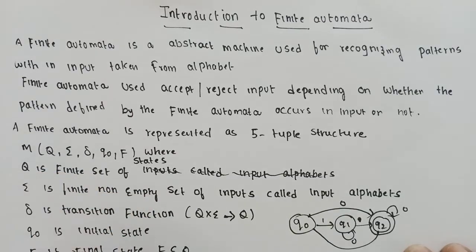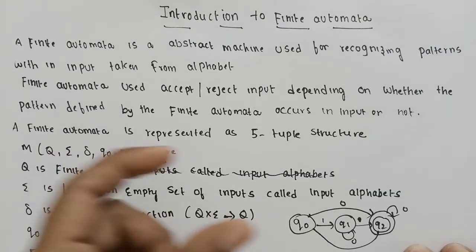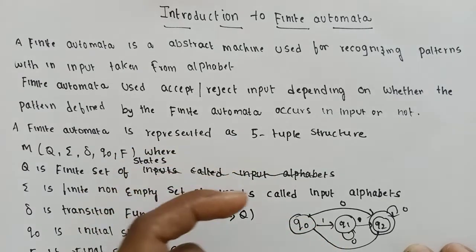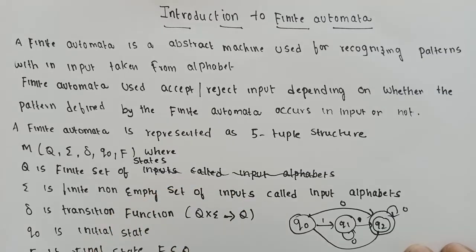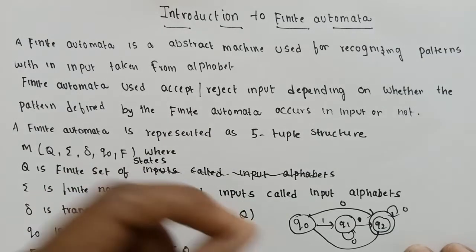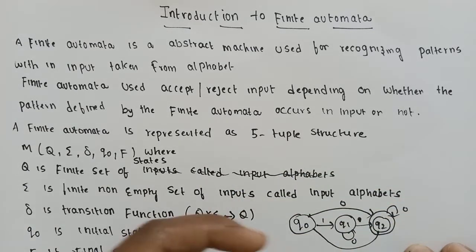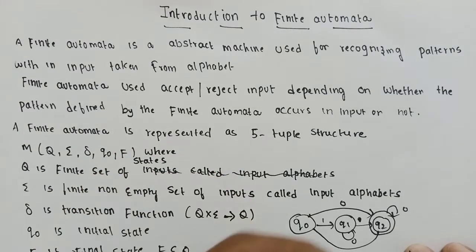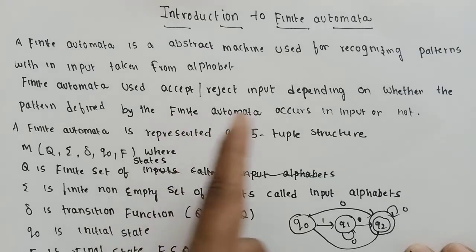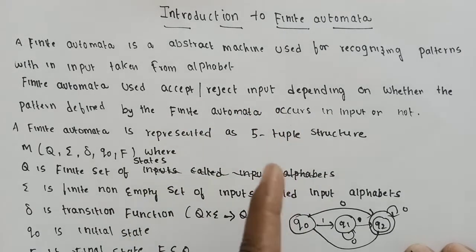When we are feeding input to the Finite Automata, it looks for specific patterns. Finite Automata is used for accepting or rejecting input based on the pattern recognized in the Finite Automata machine.